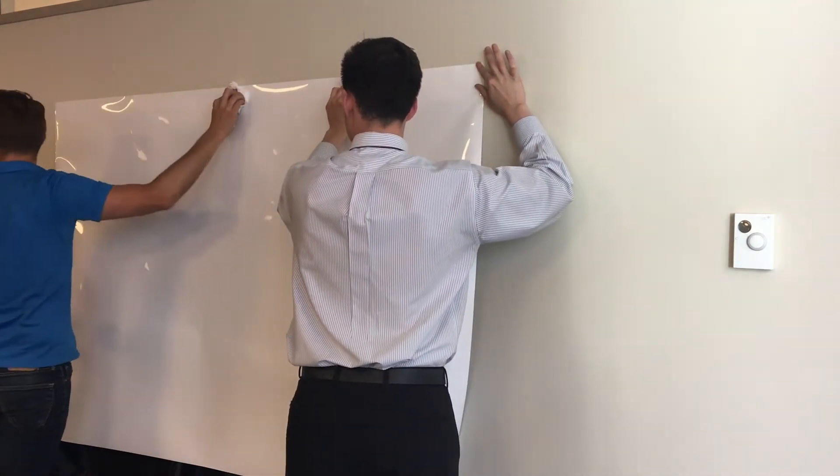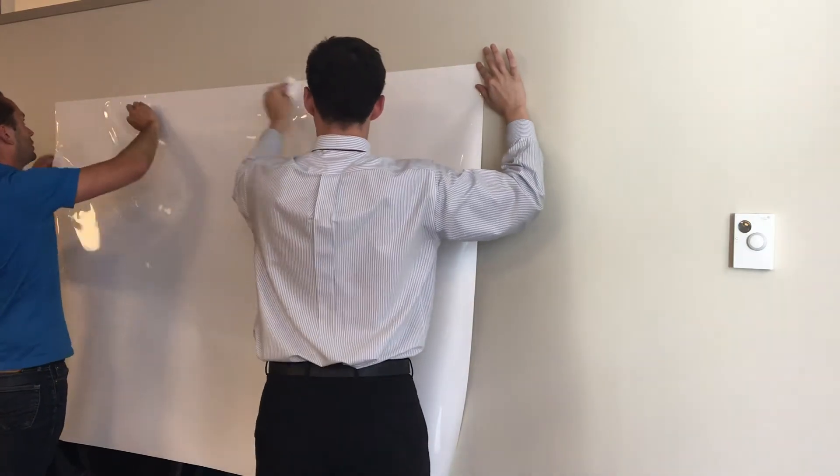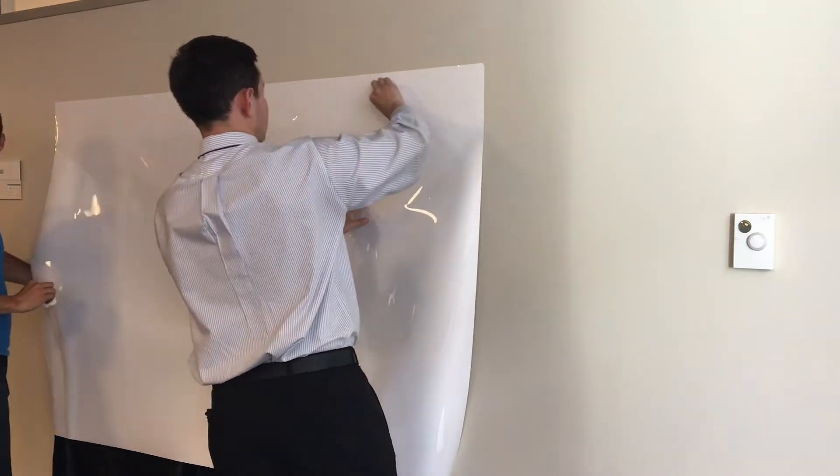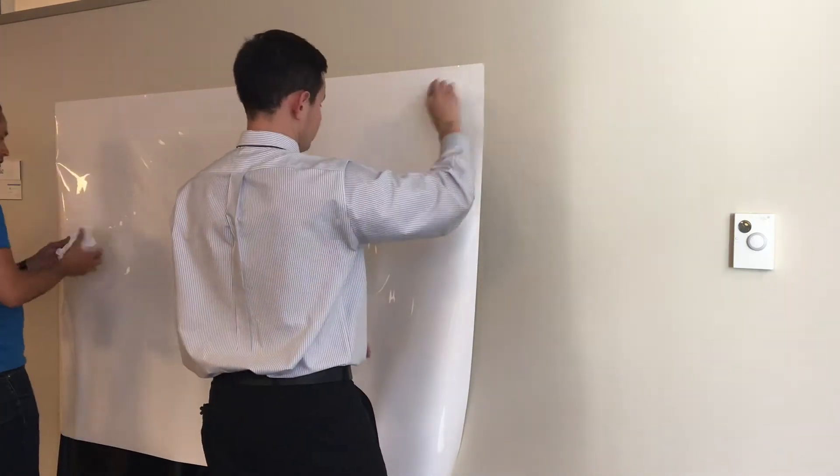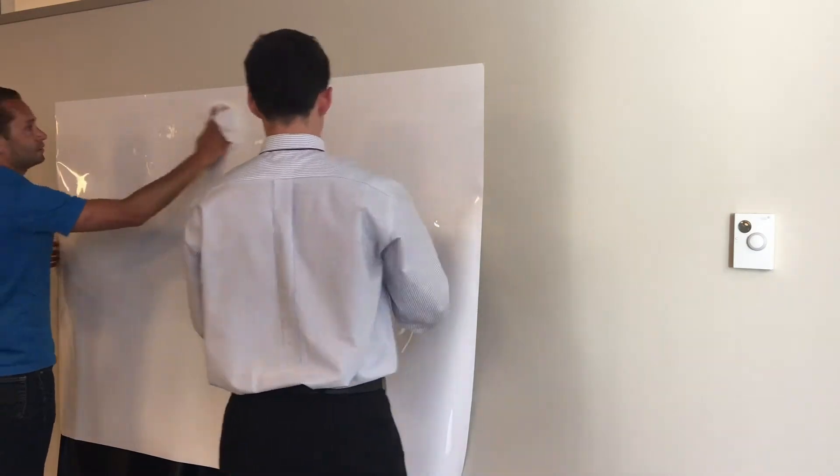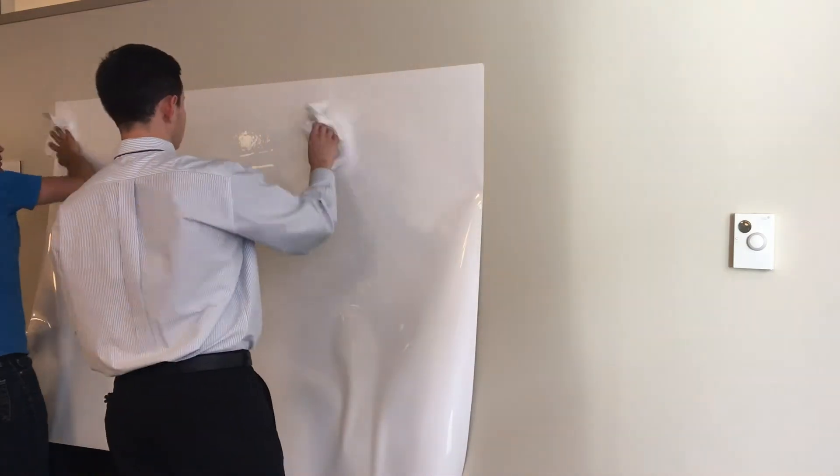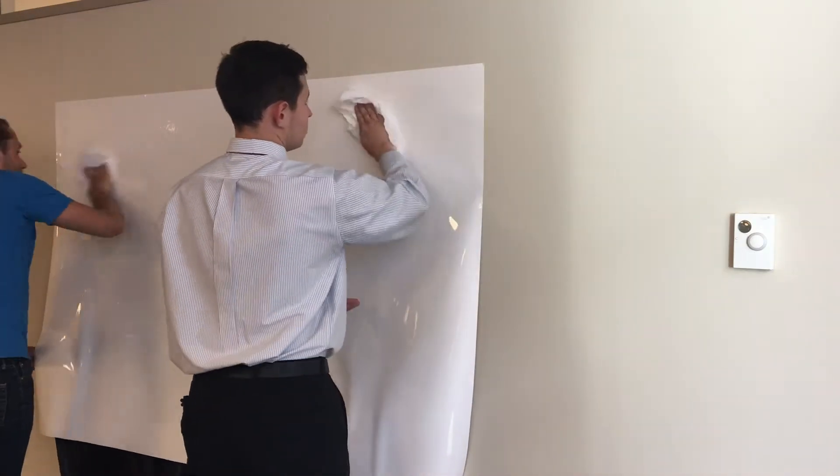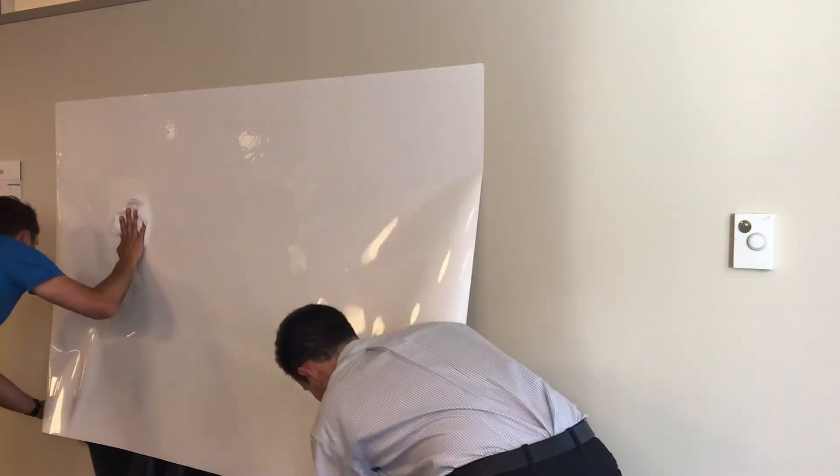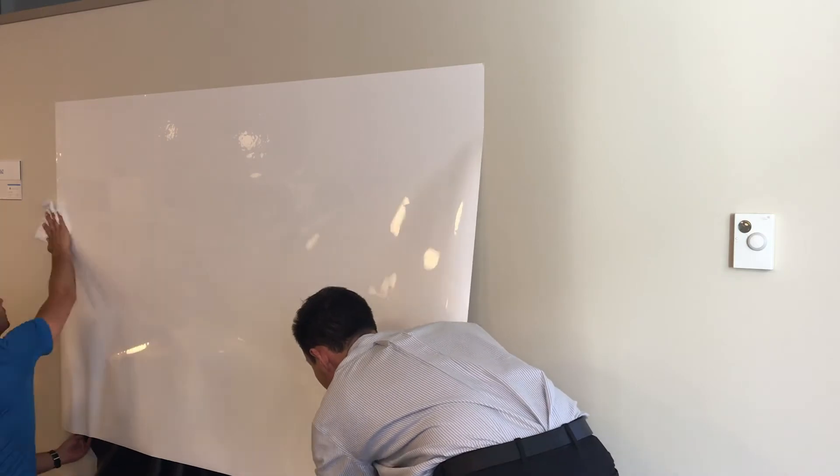As long as you don't completely fold over, any creases will just disappear once you have the adhesion to the wall. With these larger sizes I would suggest removing the upper half of the backing and working that top up. Make sure that it is level and the placement is how you would like it before you go ahead and pull down on the bottom to remove the rest of the black backing.